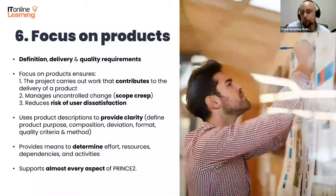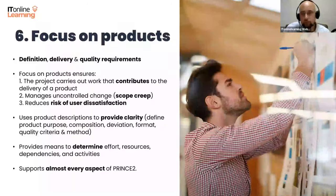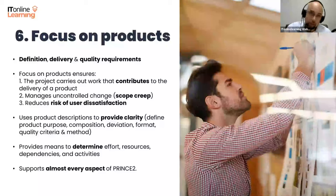PRINCE2 uses product descriptions to provide clarity by defining each product's purpose, composition, derivation, format, quality, quality criteria, and the quality method by which it would be judged. Product descriptions provide the means to determine effort estimates, resource requirements, dependencies, and activity schedules. Projects using an agile delivery approach will initially focus on purpose, derivation, and quality criteria, with more detail emerging as the product reaches its final state. The focus on products principle supports almost every aspect of PRINCE2: planning, responsibilities, status reporting, quality, change control, scope, product acceptance, and risk management.